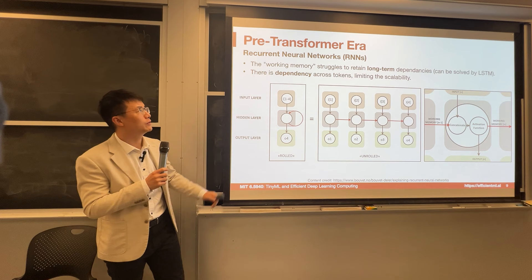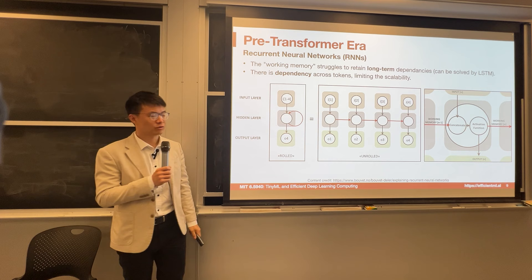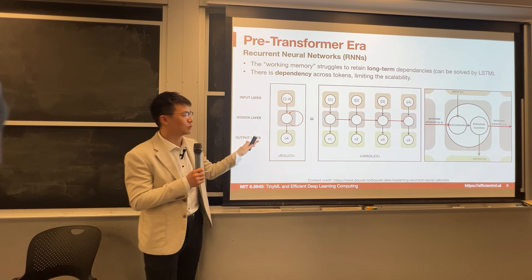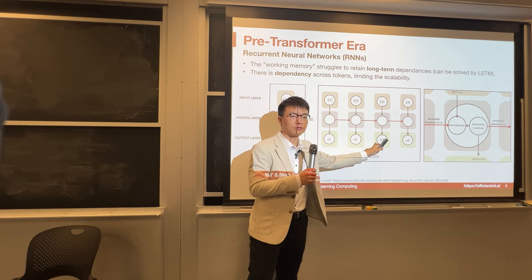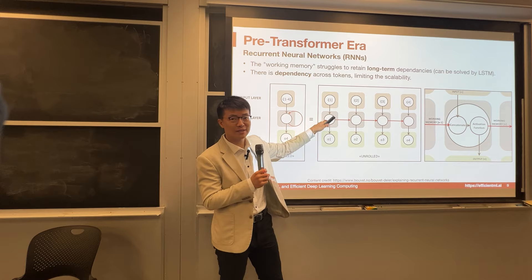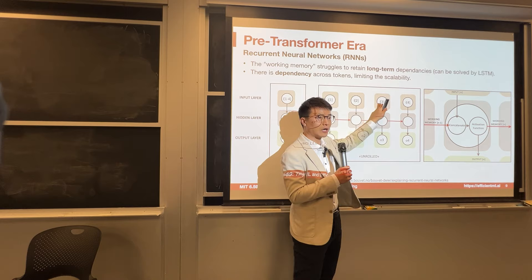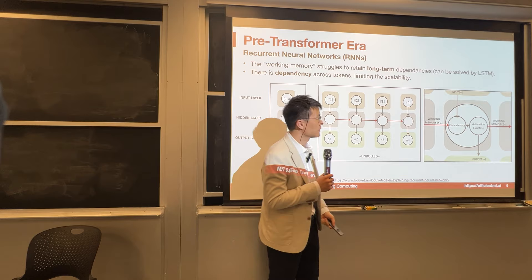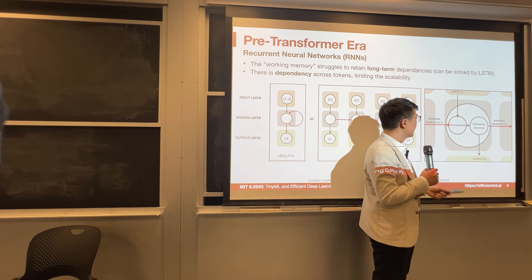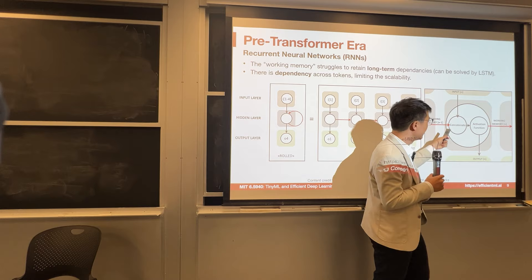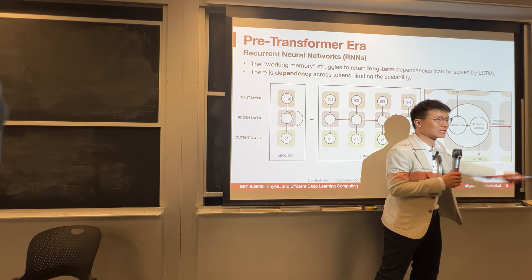Before the transformer era, people used recurrent neural nets and LSTMs to model language. The network has an input layer, hidden layer, and output layer. If we unroll this RNN in time — T1, T2, T3, T4 — each timestep has input, output, and a hidden state. The current hidden state depends on both the current input and the previous hidden state. We concatenate the previous hidden state with the current input, pass it through an activation function, produce the output, and pass it to the next timestep.